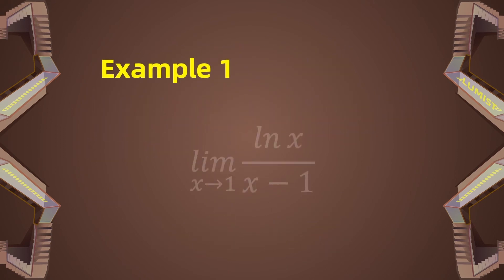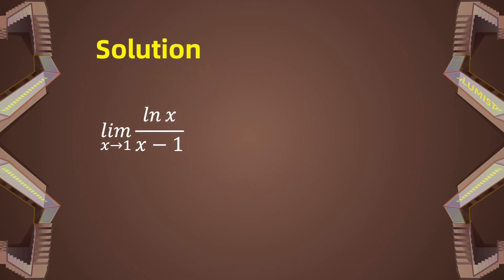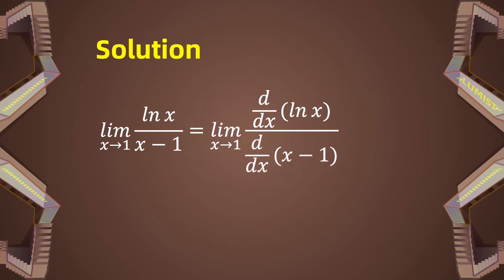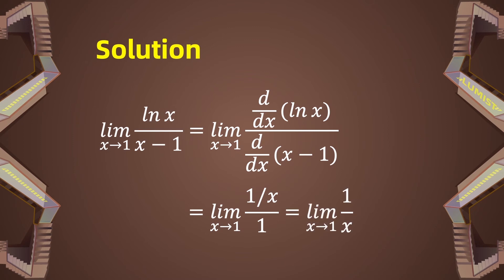Let us go through an example. Consider the limit of ln(x) over (x - 1) as x approaches 1. This limit is in the indeterminate form of 0 over 0, so we can directly apply L'Hôpital's rule. We take the derivative of the numerator, getting 1/x, and the derivative of the denominator, getting 1. So the limit of (1/x)/1 as x approaches 1 is just the limit of 1/x as x approaches 1, which gives us 1.